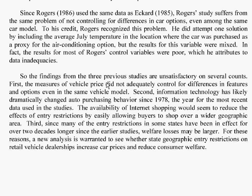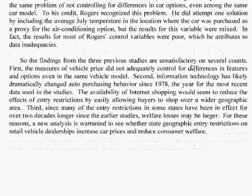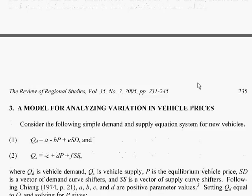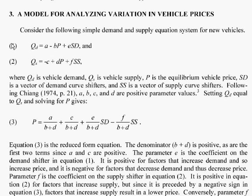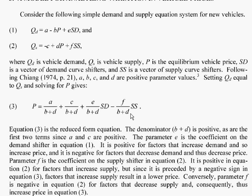He summarizes what those three previous studies found and then presents his theoretical model. He has a demand curve, a supply curve, and combines them into what's called a reduced form equation. His equation looks like price is a function of several things. This is the theory.